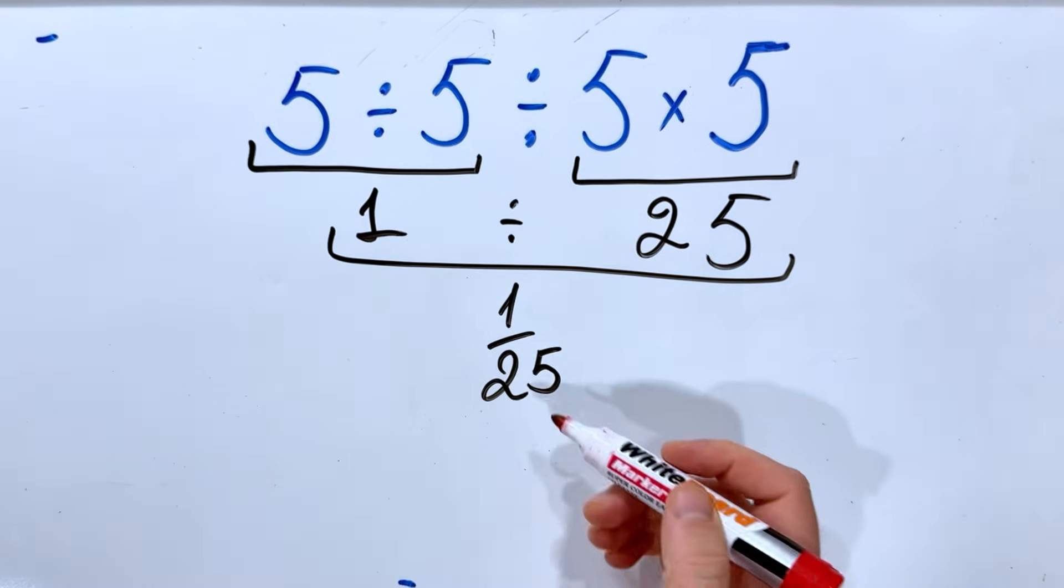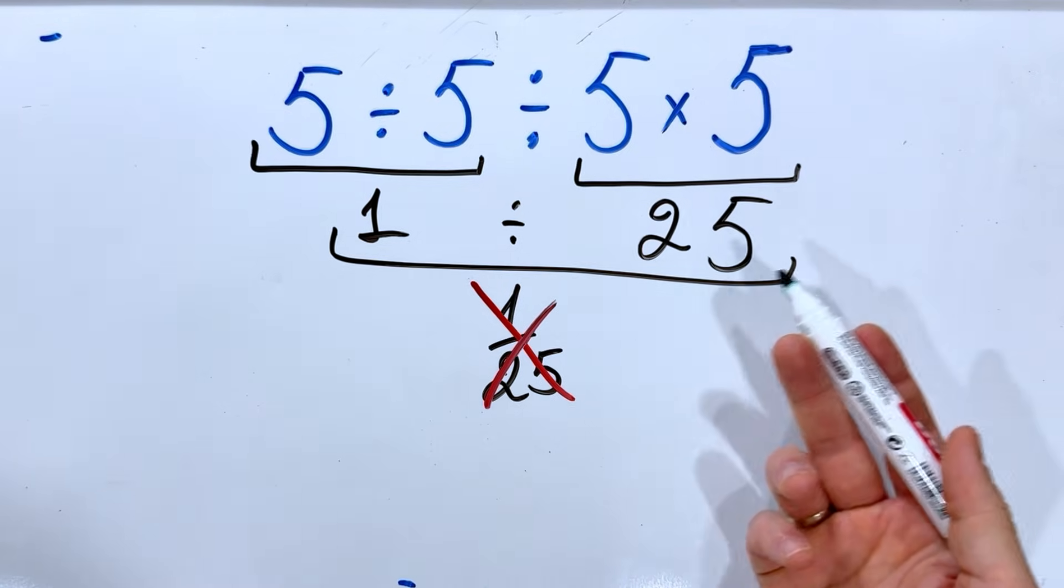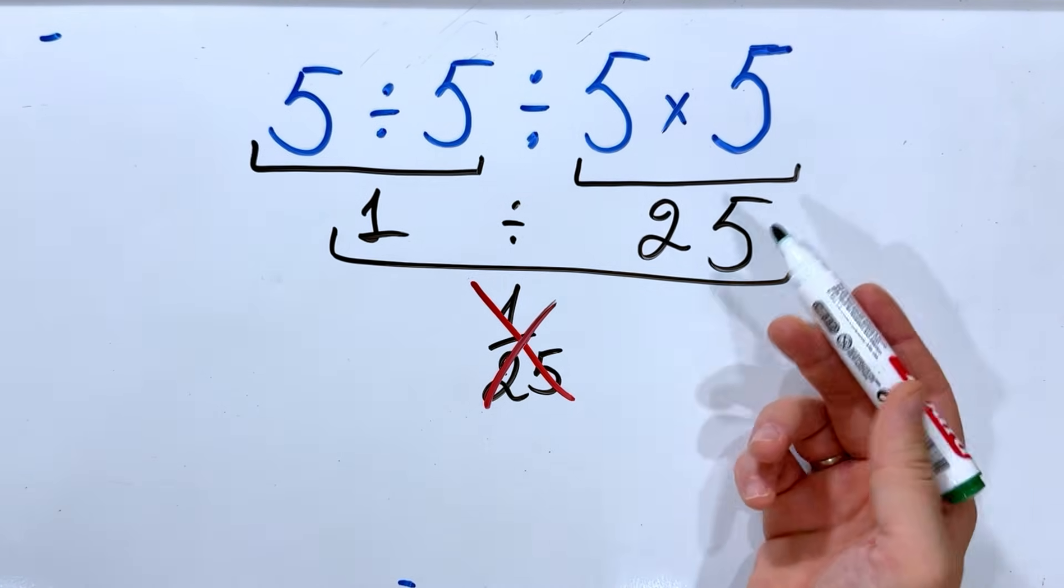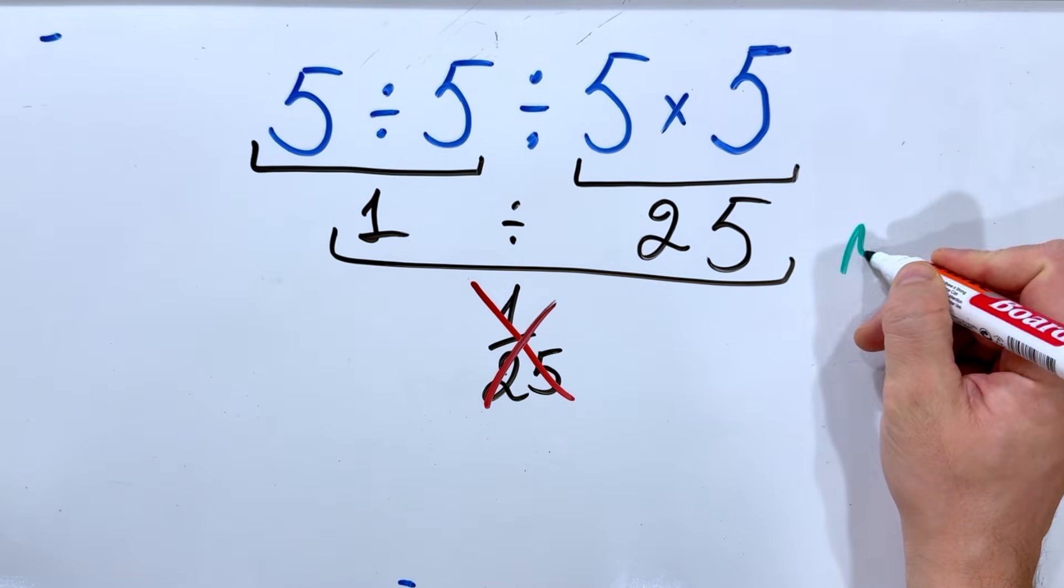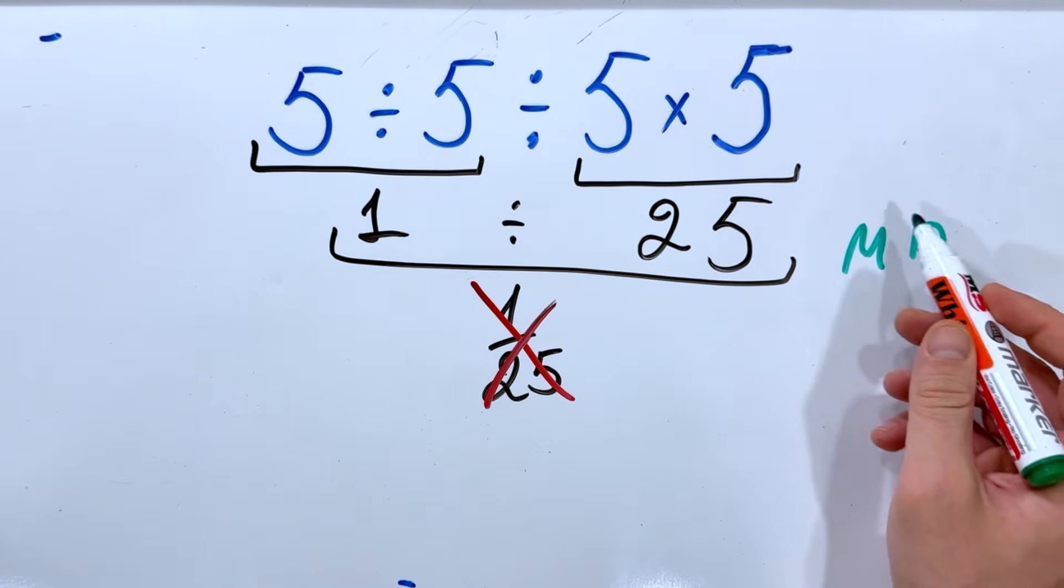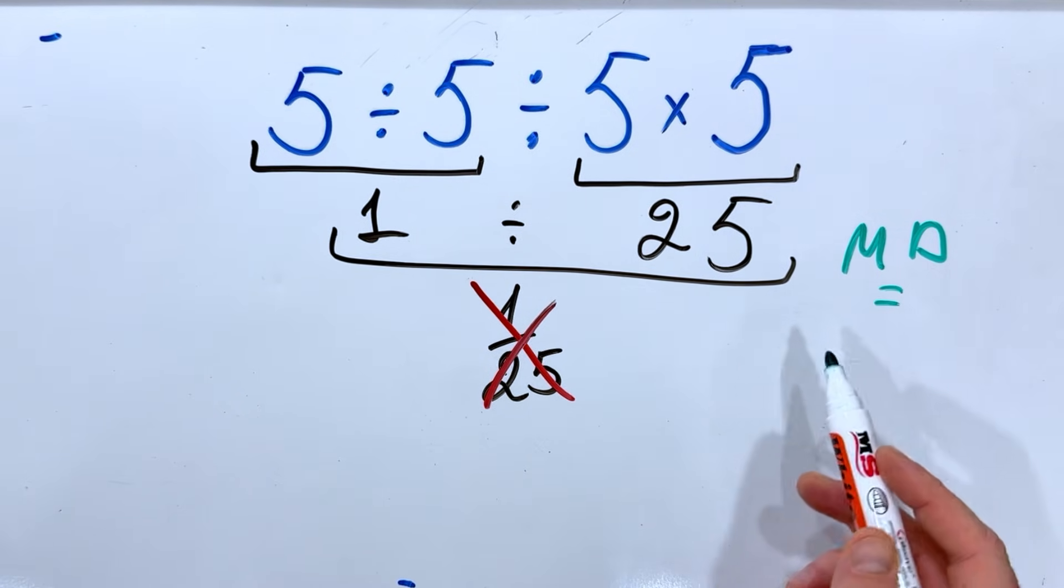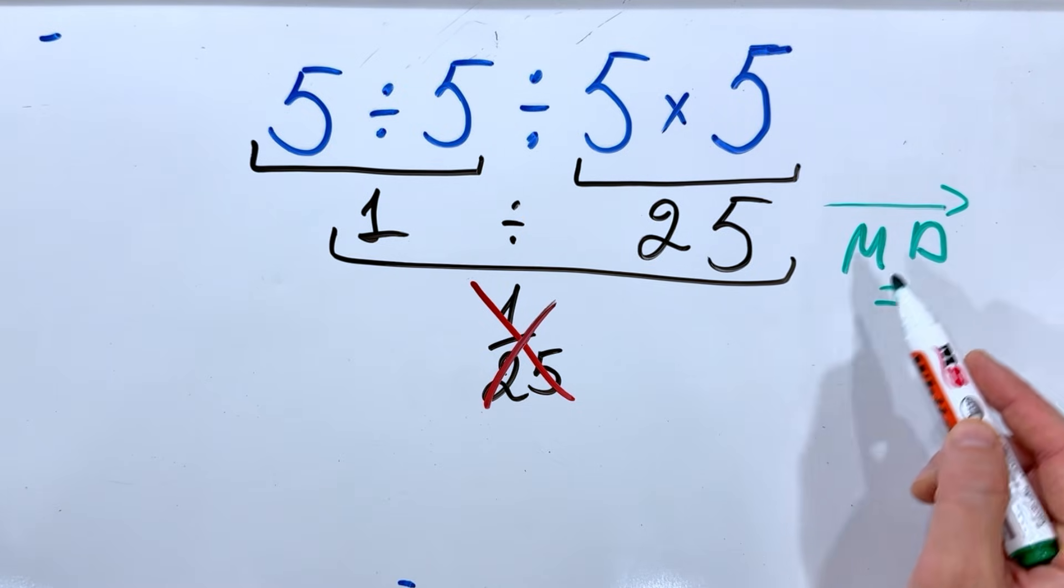But this answer is not correct. Why? Because in the order of operations, multiplication and division have equal priority and must be done from left to right.